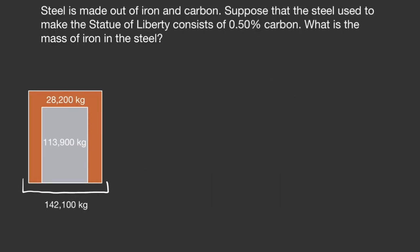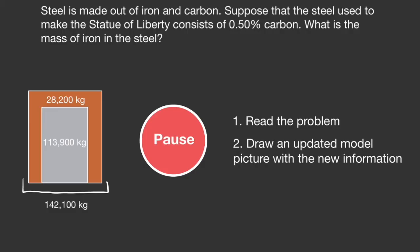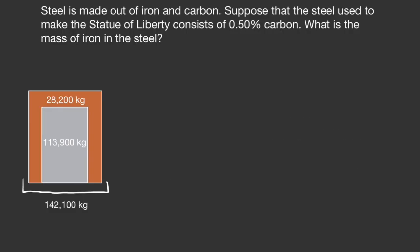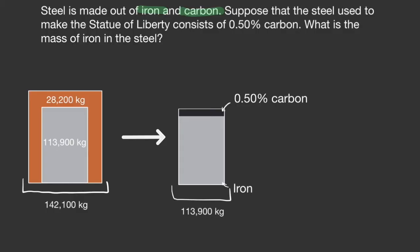Let's take a look at a similar question. Pause the video, read the problem, then draw an updated model picture with the new information. In the first sentence, we learn that steel has two parts: iron and carbon. So let's take the steel from our first diagram and add to it. We see that 0.5% of the steel is made of carbon — this tiny sliver in the diagram is all the carbon, and the rest is iron. Altogether this weighs 113,900 kilograms, as we know from the last problem.